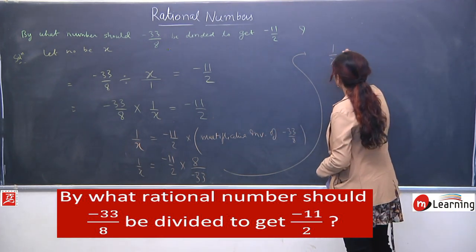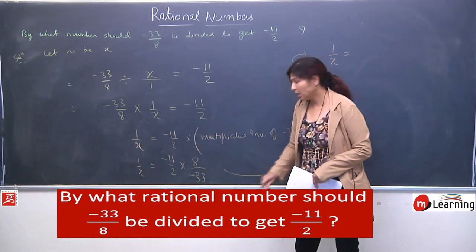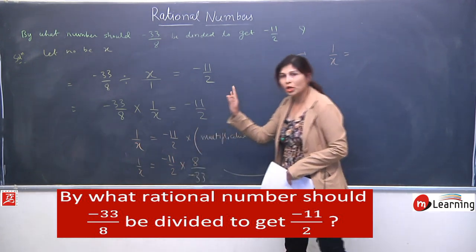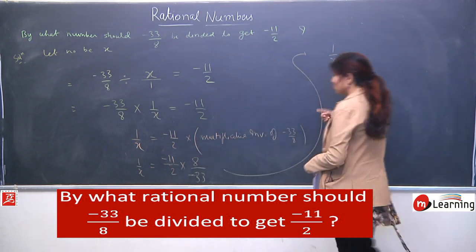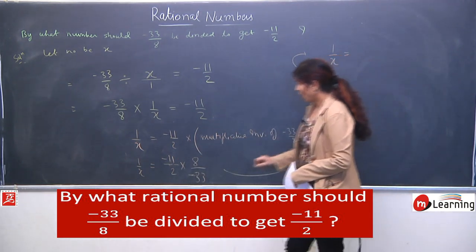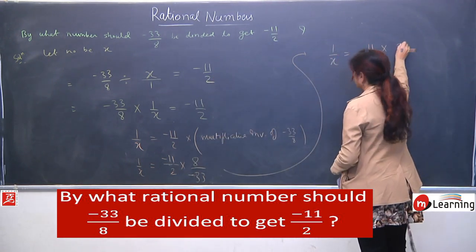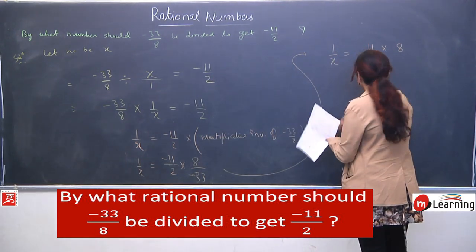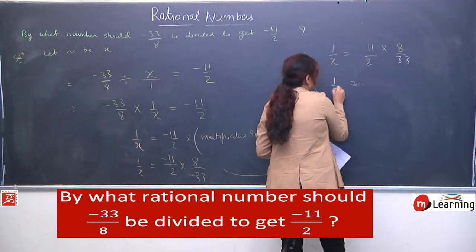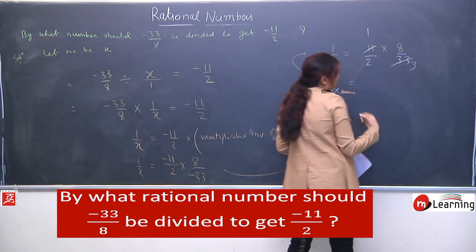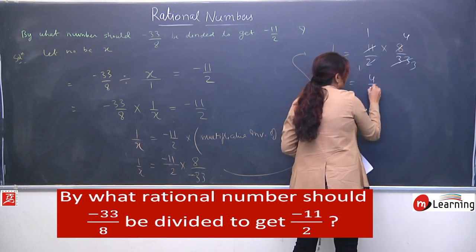Ab hamare paas: 1 by x equals to — sabse pehle sign eliminate kar denge. Minus and minus — toh jo hai woh plus ho jayega. This is minus 11 by 2 multiplied by 8 by 33 — sign ka badhrashan khatam. Ab hum fir se likhte hain simplify karke: 8 by 33. 11 ones are 11, 11 threes are 33, 2 ones are 2, 2 fours are 8. So finally it is 4 by 3.